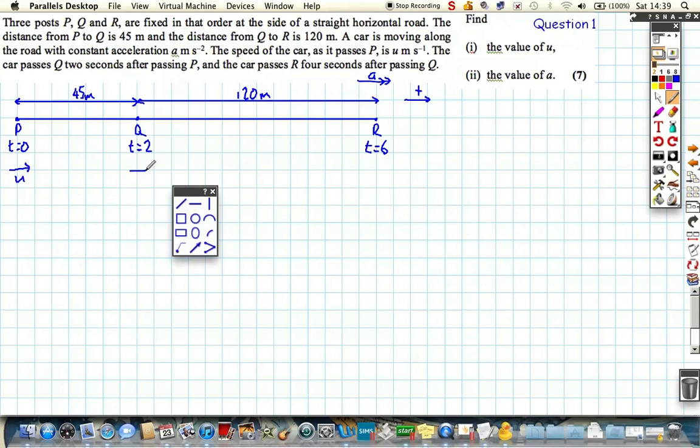Now we know it passes here with an initial velocity, it's going to pass here with some speed, and it's going to pass here with another speed. Just to get an idea what's going on. We want to find the value of u, its initial velocity, and we want to find out the value of a, its acceleration.